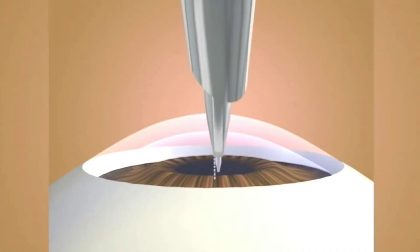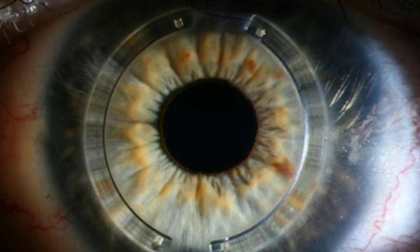A surgery may be done for mild to moderate Keratoconus, where small artificial rings are inserted into your cornea to flatten it more.